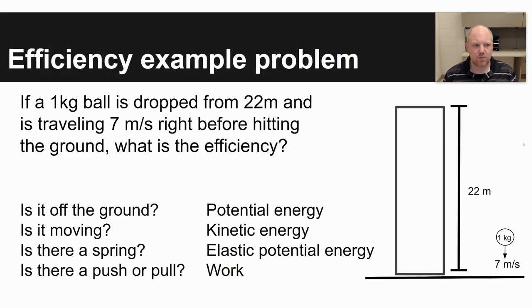So let's take a look at an example problem. What it says here is if a one kilogram ball is dropped from 22 meters and is traveling seven meters per second right before hitting the ground, what is the efficiency for this scenario?